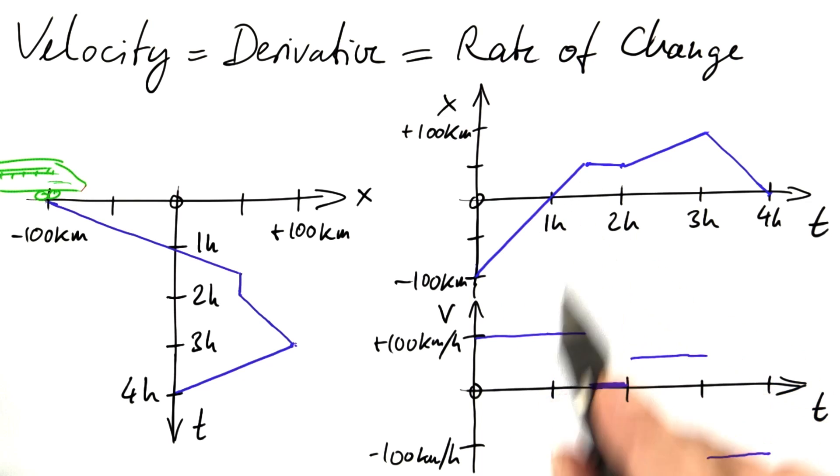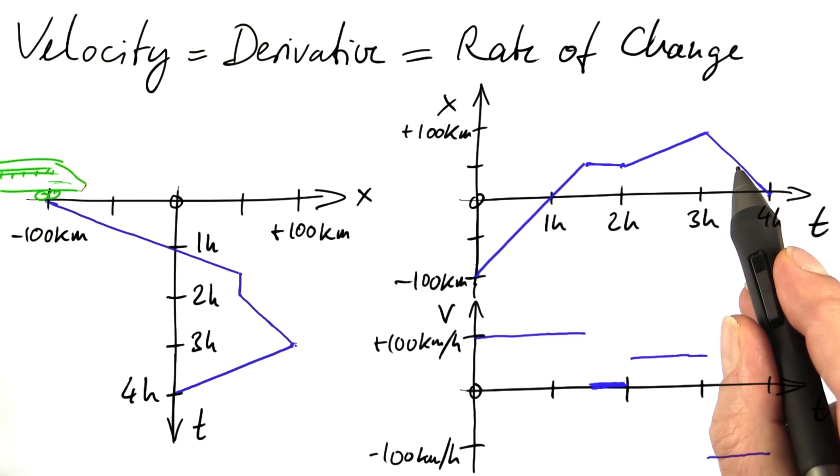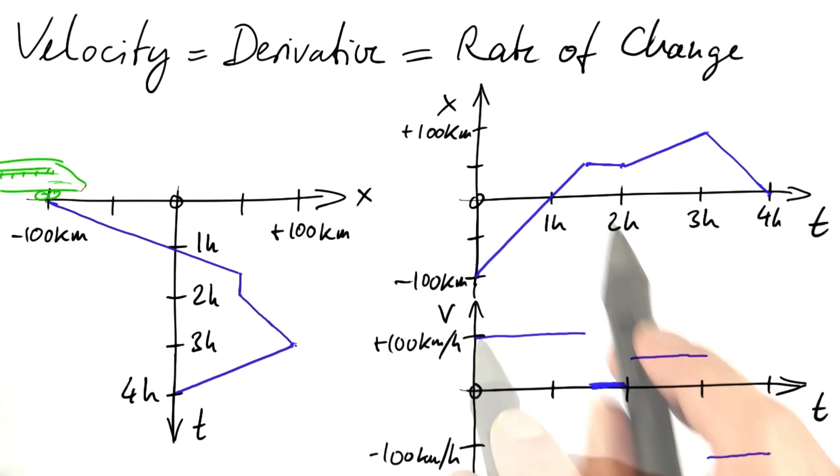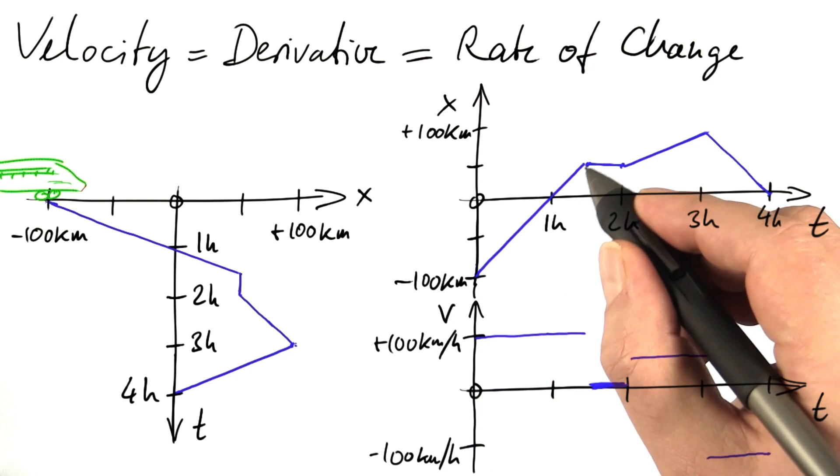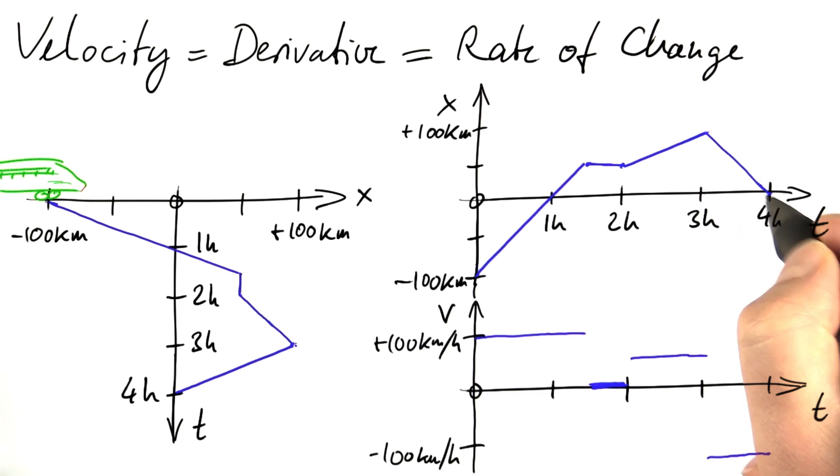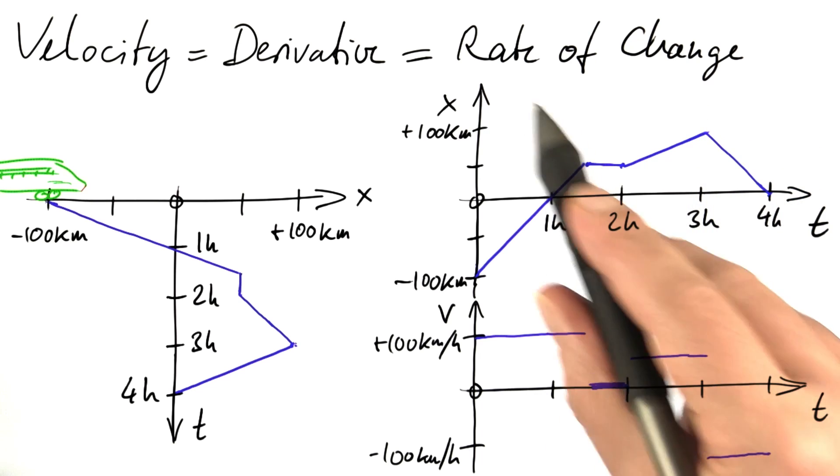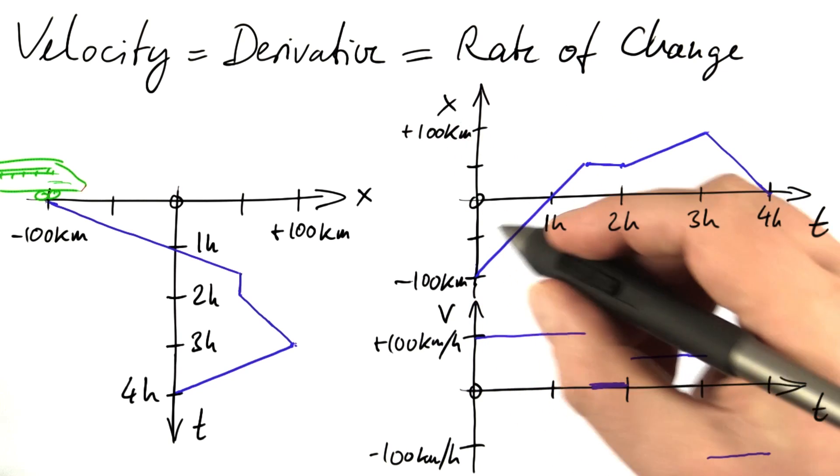So if you're going forward, it's positive. If you're going backward, it's negative. So what we see here is the velocity of the train, depending on time. That's nothing but the rate of change of the position, which we call x. By how much does x change if a certain amount of time passes?